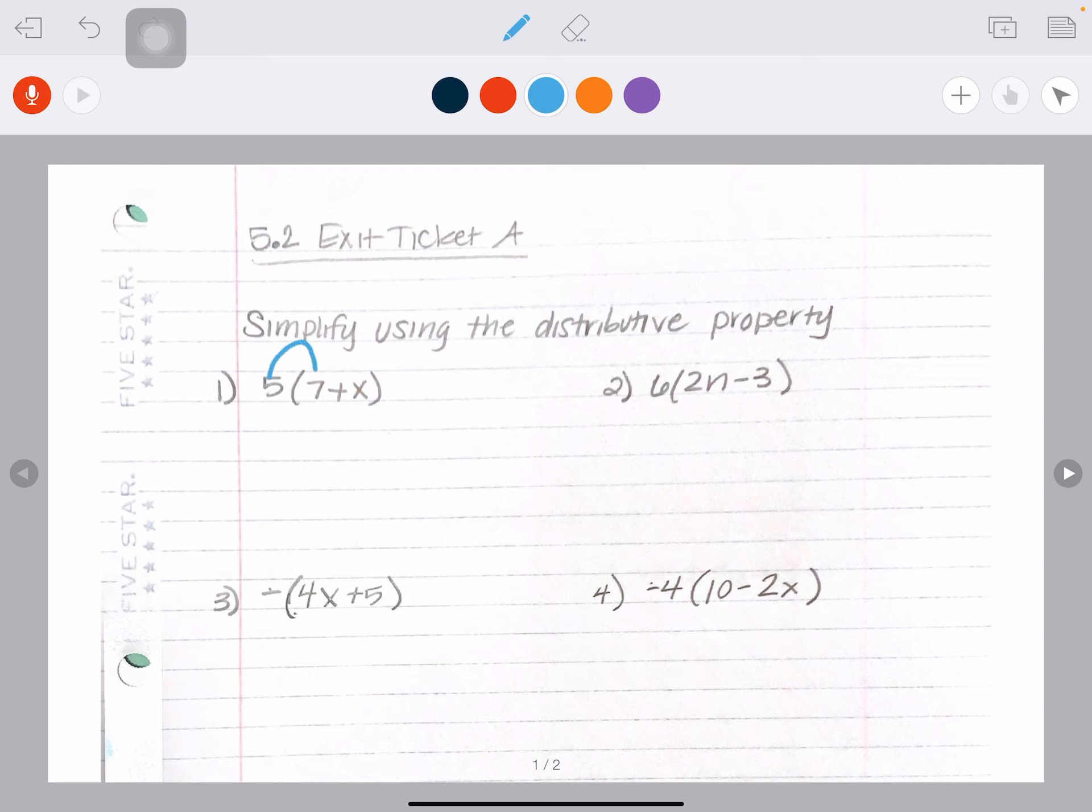We're going to say that I'm distributing the five to the seven. So that's five times seven. And then I have to write my plus sign. And then I have to distribute my five to my X. So that's five times X. So now I'm just going to write what I have.